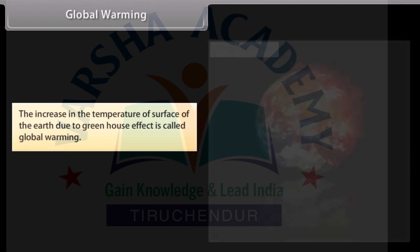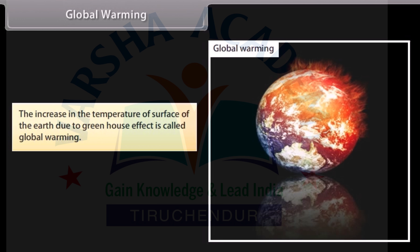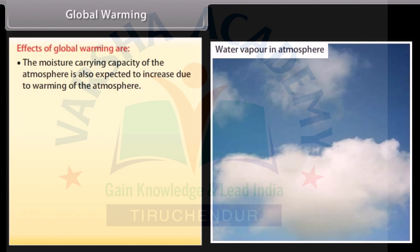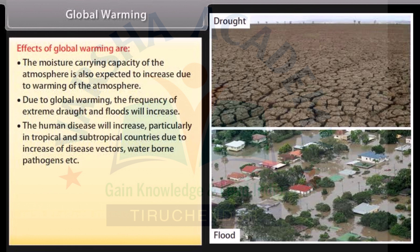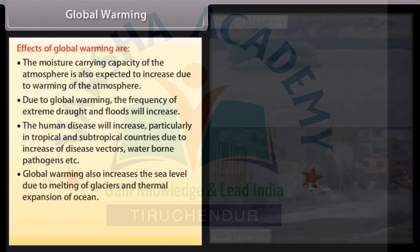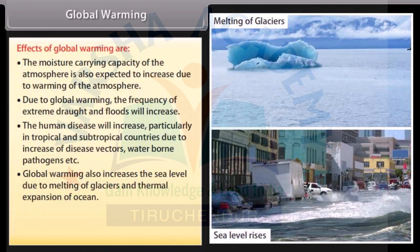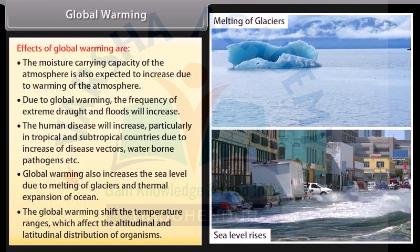Global Warming: The increase in the temperature of the surface of the Earth due to the greenhouse effect is called global warming. Effects of global warming include increased moisture-carrying capacity of the atmosphere, increased frequency of extreme droughts and floods, increased human disease particularly in tropical and subtropical countries due to disease vectors and waterborne pathogens, rising sea levels due to melting of glaciers and thermal expansion of oceans, and shifts in temperature ranges affecting the altitudinal and latitudinal distribution of organisms.